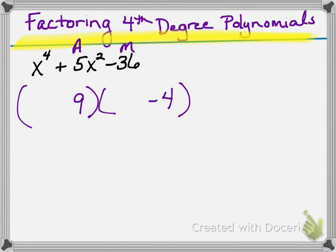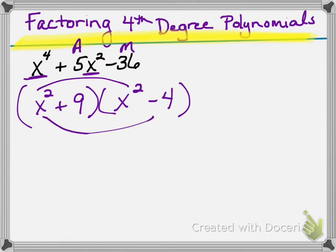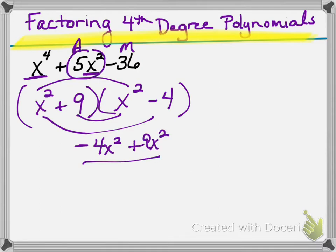In the past, we would have x plus 9 and x minus 4. But since it's a fourth degree, and I have to get a middle term of x squared, these are each going to be x squared, because x squared times x squared is x to the fourth. x squared times negative 4 is negative 4x squared, and 9 times x squared is 9x squared. These two combine to give you that 5x squared in the middle.